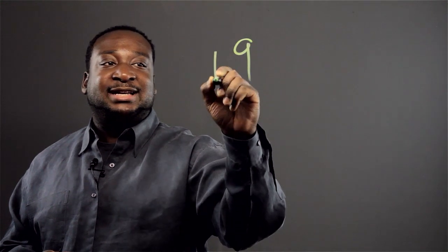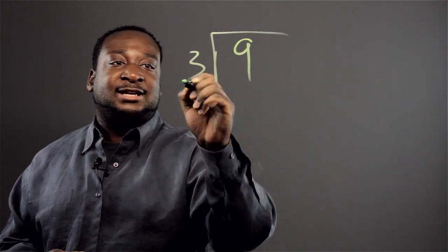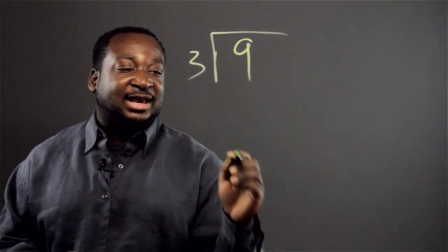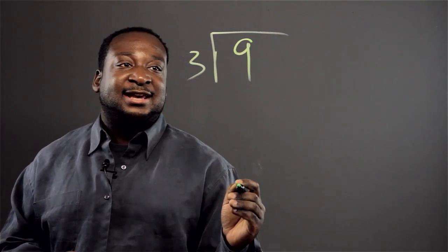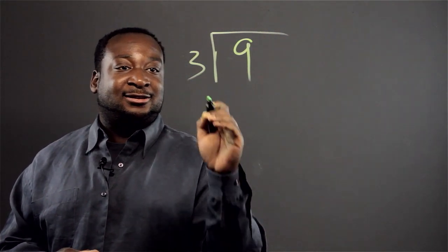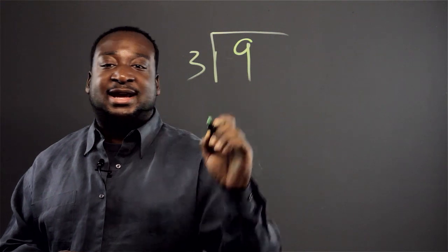So let's say we have 9 and we're going to divide 9 by 3. Basically, what we're asking is how many times can we take 3 away from 9?